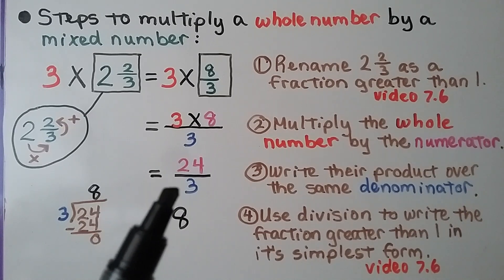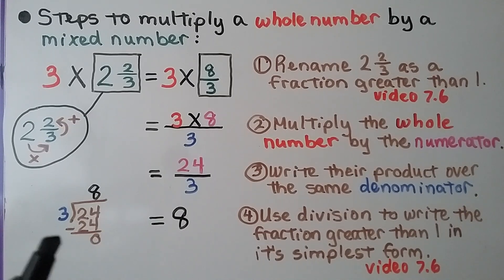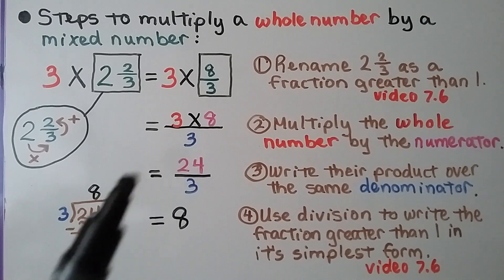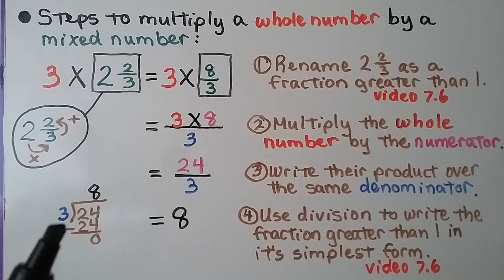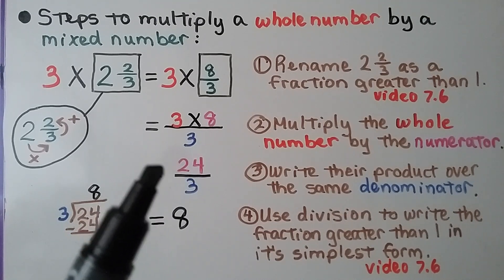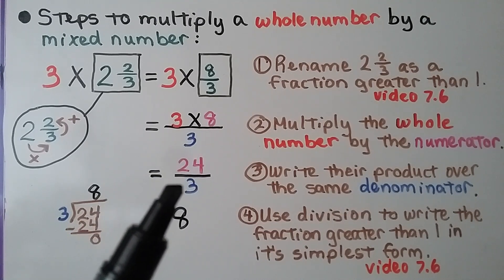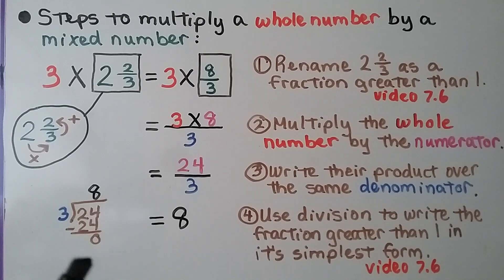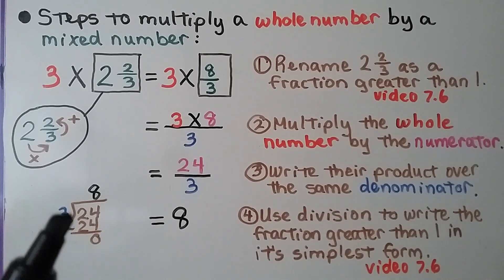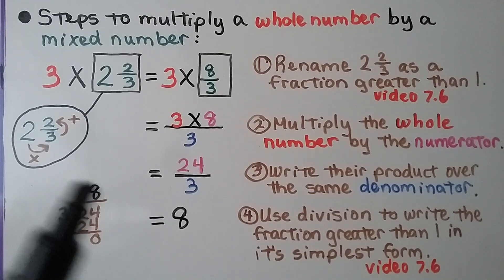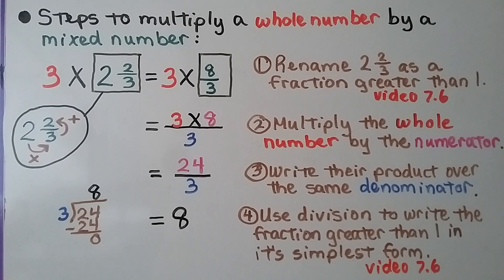Now we use division to write the fraction greater than 1 in its simplest form. We think 24 divided by 3. Well, 3 times 8 is 24. The quotient is going to be our whole number 8.